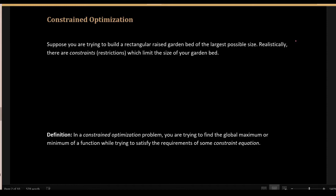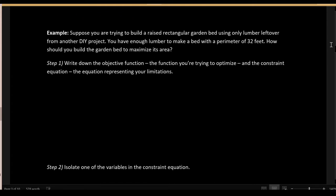In a constrained optimization problem, we have some quantity and we're trying to find either the global maximum or the global minimum of a function representing that quantity, but we also have at least one other equation called the constraint equation, which represents any limitations on what we're able to do. Suppose I'm trying to build a raised rectangular garden bed but I don't want to spend any money — I'll use only leftover lumber. I count it up and it turns out I have enough to build a bed with a perimeter of 32 feet. How should I build this garden to maximize the area?